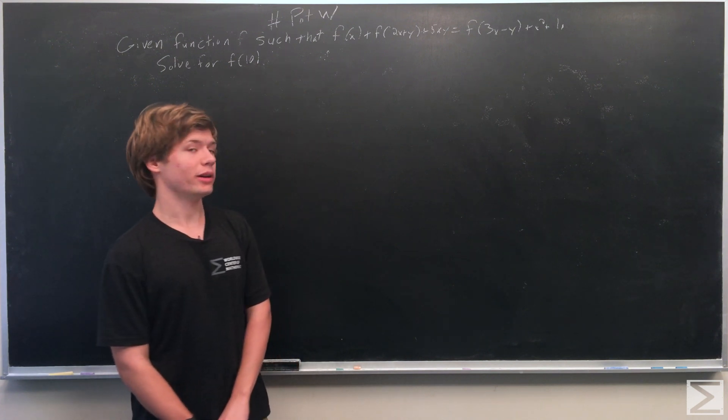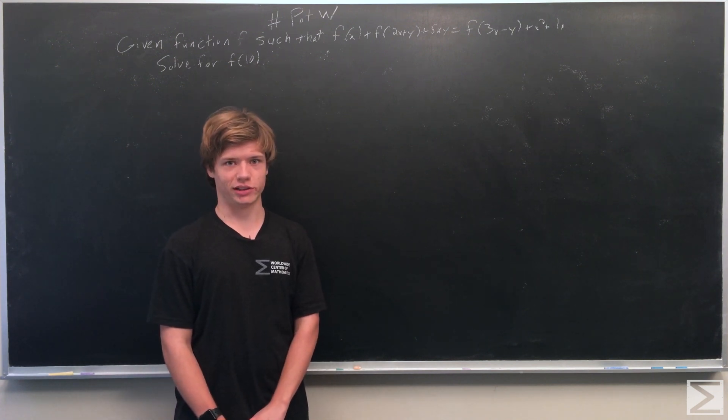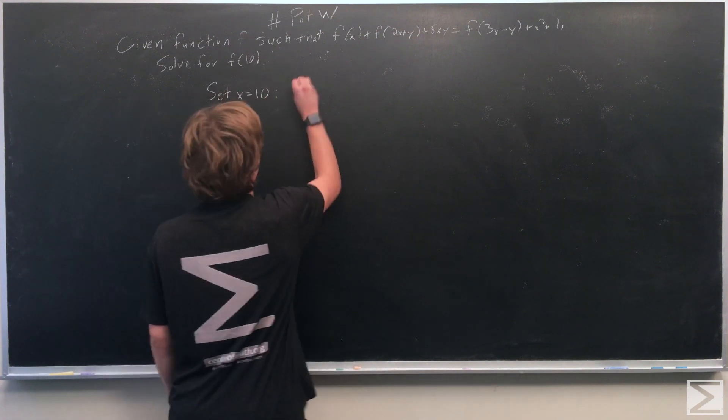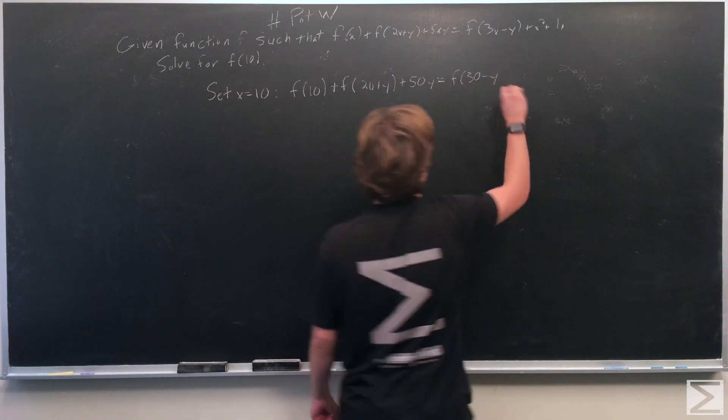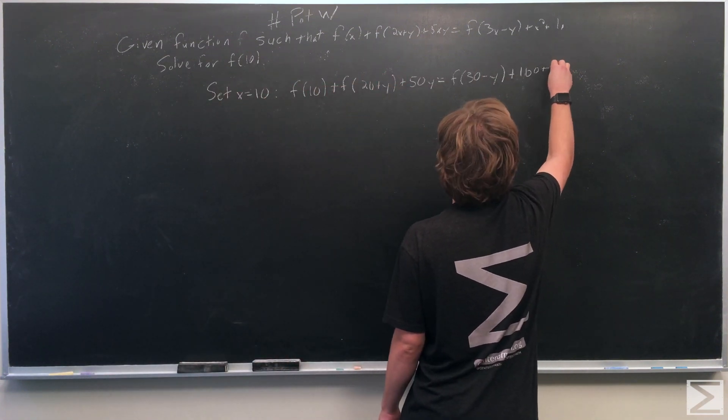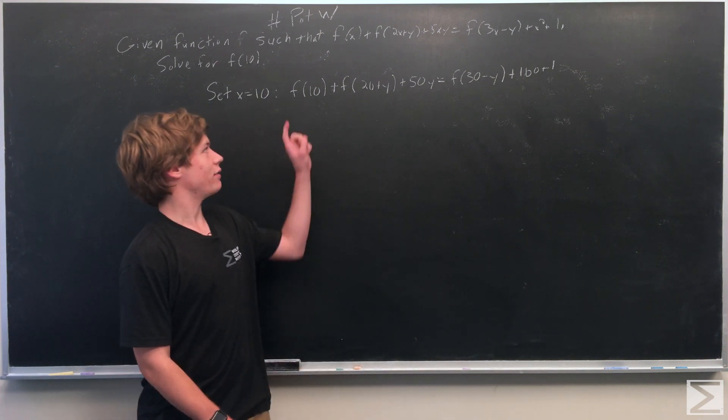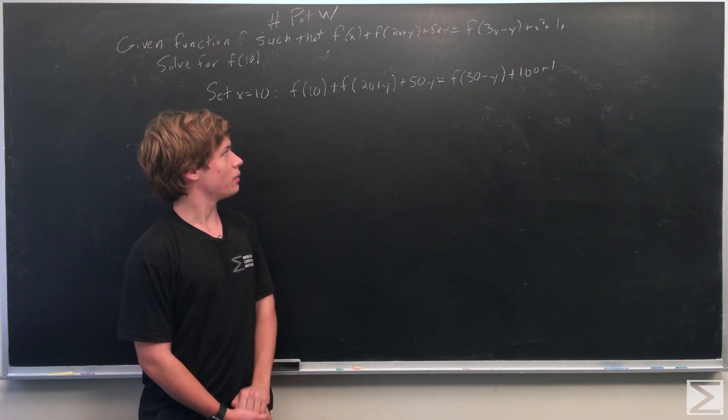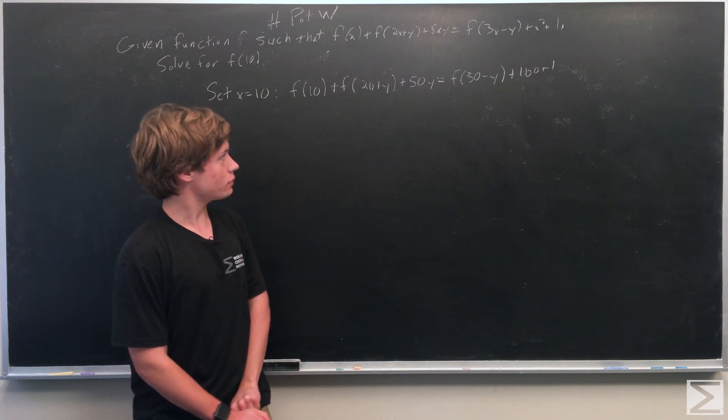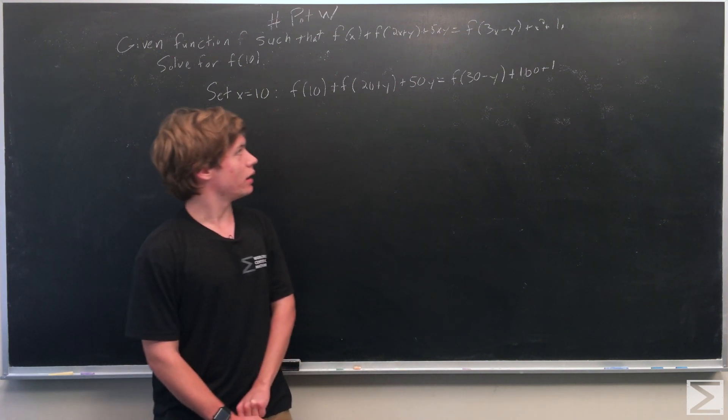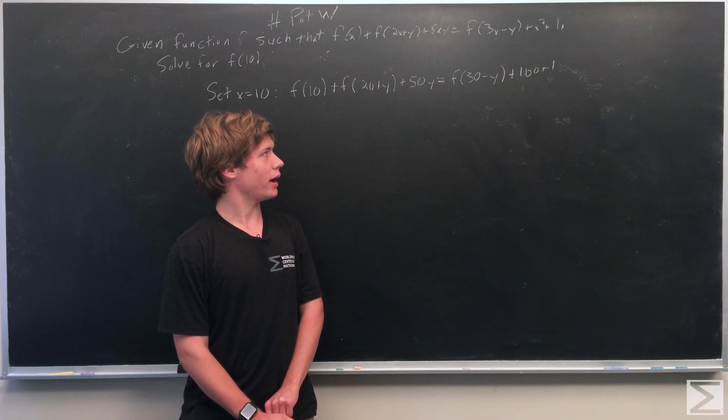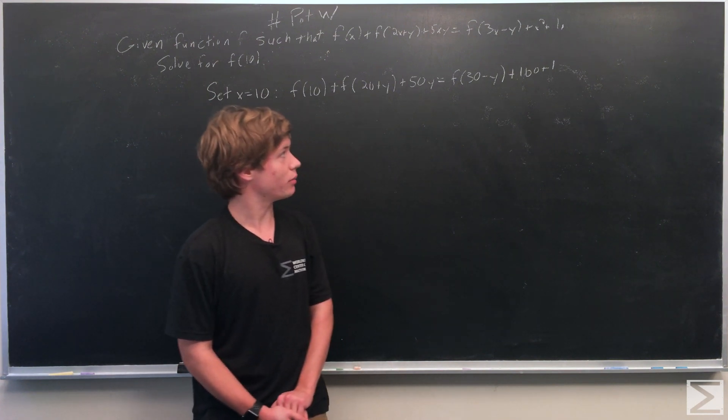So the first thing we're going to do is set x equal to 10. As soon as we've done that, we see that f(10) + f(20+y) + 50y = f(30-y) + 100 + 1.